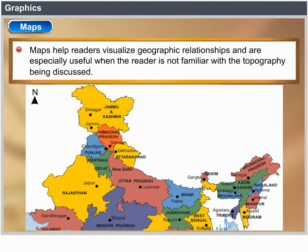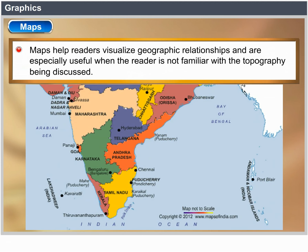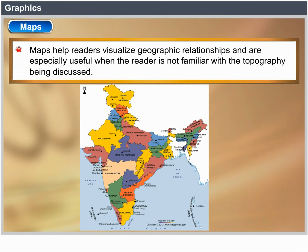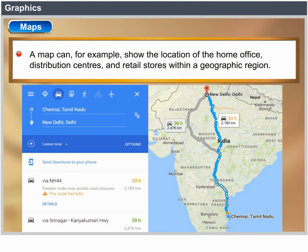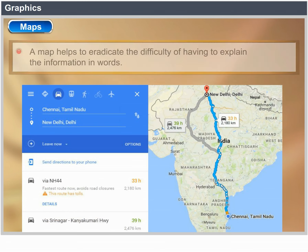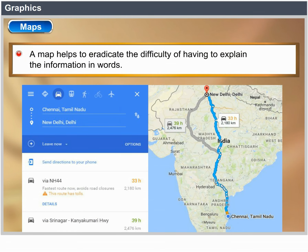Maps. Maps help readers visualize geographic relationships and are especially useful when the reader is not familiar with the topography being discussed. A map can, for example, show the location of the home office, distribution centers and retail stores within a geographic region. A map helps to get around the difficulty of having to explain the information in words.